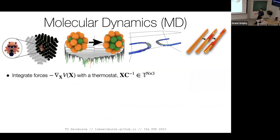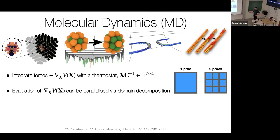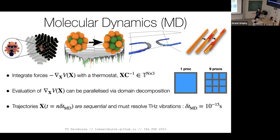We do this with molecular dynamics: integrating forces from some potential where positions are confined to a periodic volume. We can parallelize this quite a bit. Because we have short-range interactions, I can easily parallelize the evaluation of my forces. With a big computer, I can go to larger and larger systems because the number of atoms per processor can remain constant — what we call weak scaling in parallel.